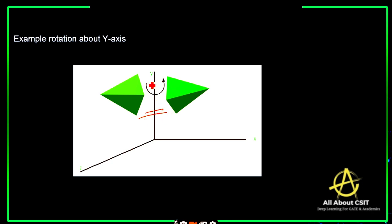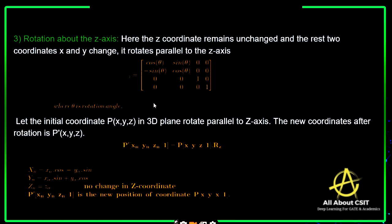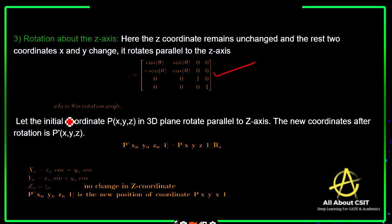Visually, the object rotates parallel to the Y-axis. This is your original object present along the Y direction — it rotates parallel to the Y-axis like this. For rotation about the Z-axis, the Z coordinate remains unchanged and X and Y change. The homogeneous coordinate matrix representation has theta as the rotational angle.